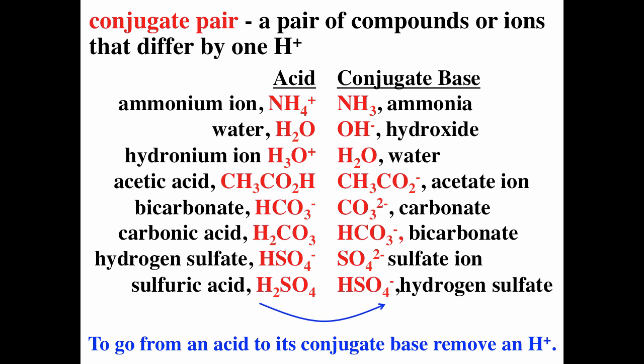To go from the acid to the conjugate base, we just remove a hydronium ion. Notice that you reduce the number of hydrogens and also reduce the charge. For example, sulfuric acid H₂SO₄ — when you remove the hydronium ion, you remove a hydrogen, giving you HSO₄⁻ because you also remove the plus charge. Similarly, NH₄⁺ becomes NH₃ when you remove the hydronium ion. When you remove the hydronium ion, you remove the hydrogen and reduce the charge.